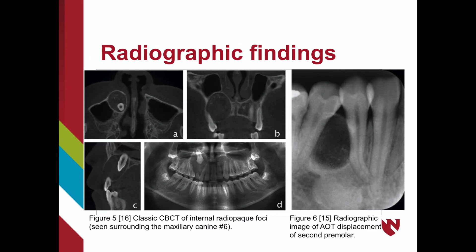In Figure 5, we see a CBCT demonstrating a classic AOT. Shown are the internal radiopaque foci surrounding the maxillary canine. However, in the panoramic image D, we can only see a few thin radiopaque lines representative of these. Notice the enlarged interdental space, the displaced roots of the lateral incisor and first premolar, and the absence of root resorption.